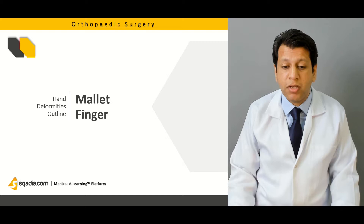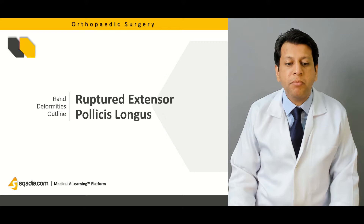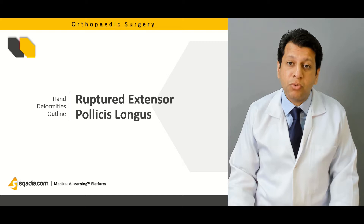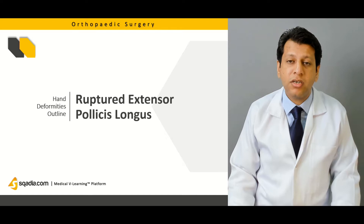We will also briefly discuss what happens in ruptured extensor pollicis longus, or ruptured EPL, which may be associated with trauma or a POP cast given for distal radius fracture, or it may be associated with degenerative diseases such as rheumatoid arthritis.